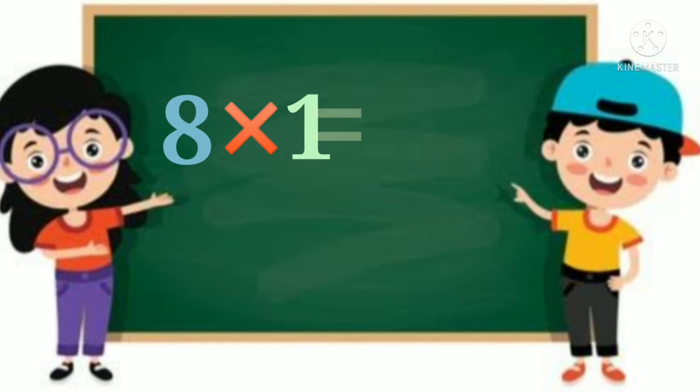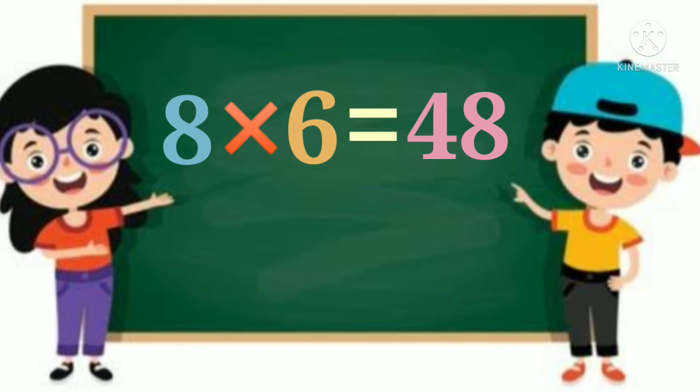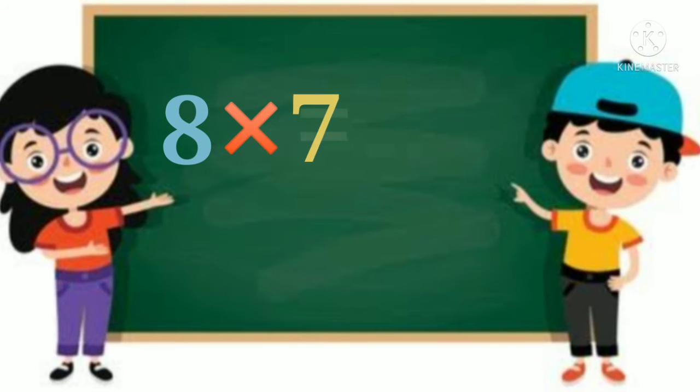Let's get started! 8 ones are 8, 8 twos are 16, 8 threes are 24, 8 fours are 32, 8 fives are 40, 8 sixes are 48, 8 sevens are 56, 8 eights are 64, 8 nines are 72, 8 tens are 80.